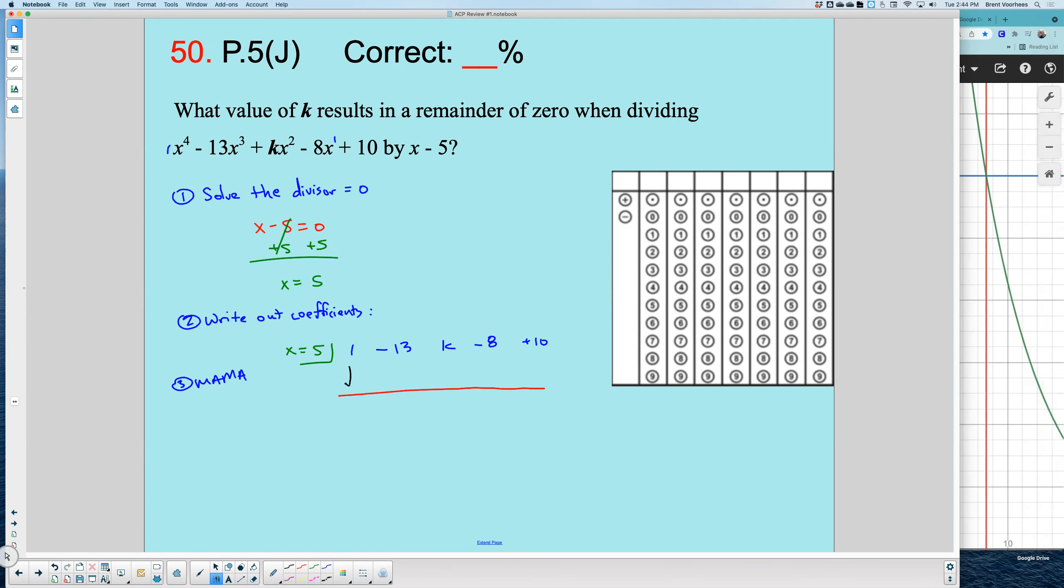So the one drops, and I multiply 1 times 5 is 5. And I'm going to add these together and I get -8. And then I multiply, and I get -40.